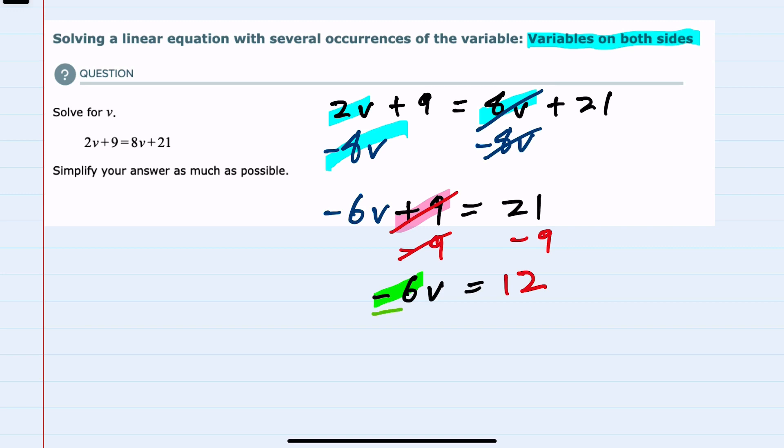That will cancel the minus 6s on the left-hand side, leaving me with just the V. And on the right-hand side, 12 divided by minus 6 leaves me a negative 2. That answer is simplified as much as possible.